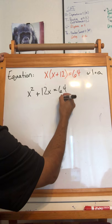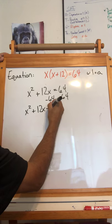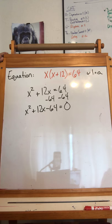Okay? So that gives me x squared plus 12x minus 64, and that's 0, equals 0.